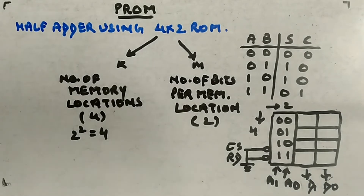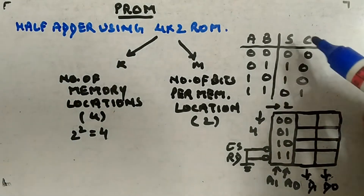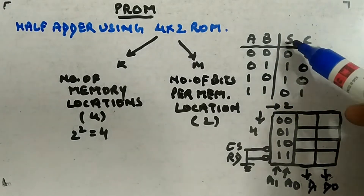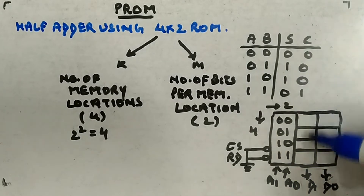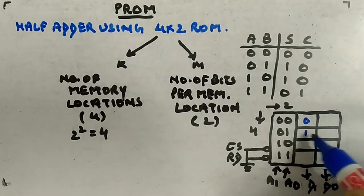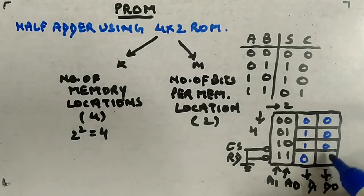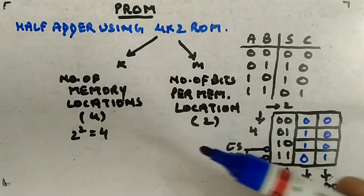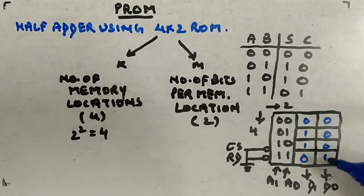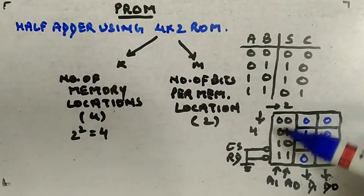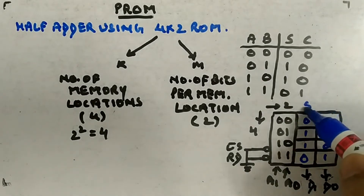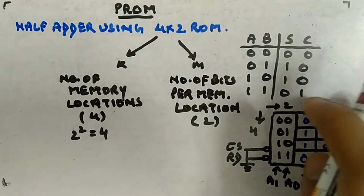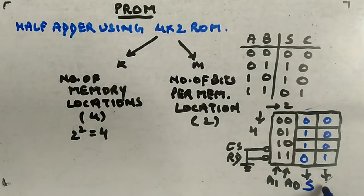Now for a half adder, recall the truth table: AB = 00, 01, 10, 11; Sum = 0, 1, 1, 0; Carry = 0, 0, 0, 1. You can map these directly into the ROM - write 0110 in the sum column and 0001 in the carry column. This becomes your half adder. You don't need any additional circuitry; just use a 4×2 ROM where one column represents Sum (S) and the other represents Carry, with inputs A and B.